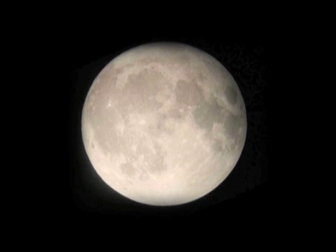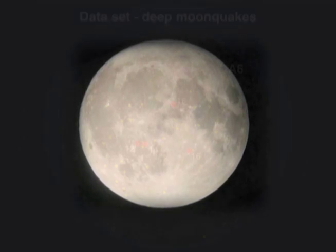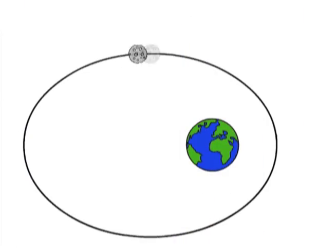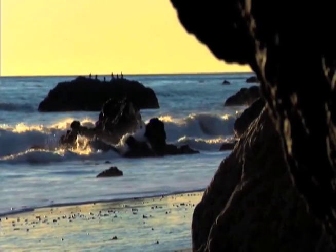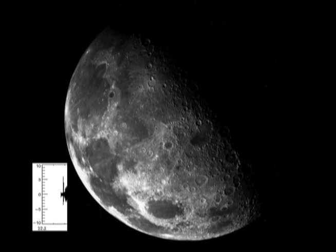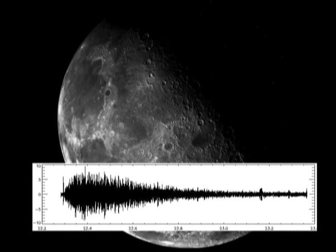The third type of event recorded on the moon is called a deep moonquake. These are much more frequent, but they're very small. The deep moonquakes are actually related to the tides. If you think about the moon orbiting the earth, you have a gravitational interaction between these two bodies. That interaction is what causes tides in the earth's ocean — these things come in and go out with a periodicity to it — and the same thing is what causes these deep moonquakes on the moon.